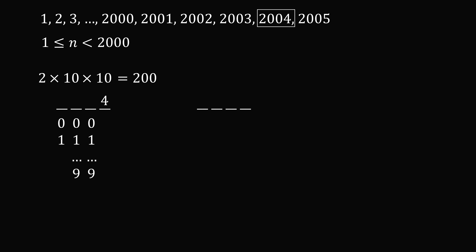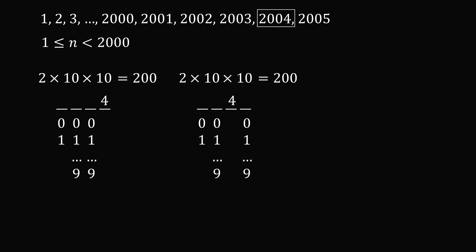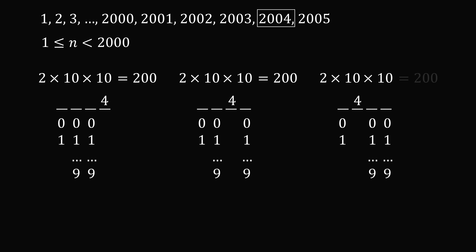Let's do the same calculation where we have a 4 in the tens column. For the thousands column we could have 0 or 1 — two possibilities — for the hundreds column we have 10 possible digits, and in the units column we have 10 more possibilities. So there are 200 numbers like this. Similarly, for a 4 in the hundreds column, we have two options for the thousands place and 10 options for each of the tens and ones place — again 2 × 10 × 10 = 200.